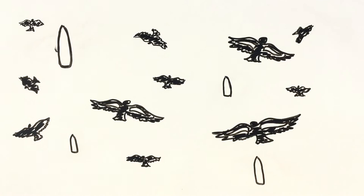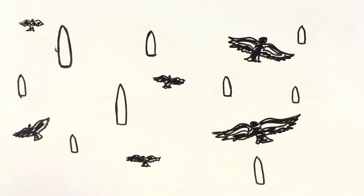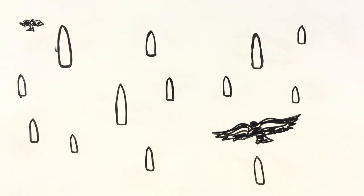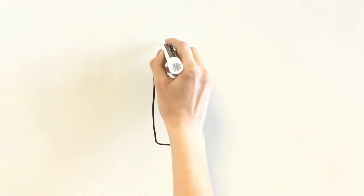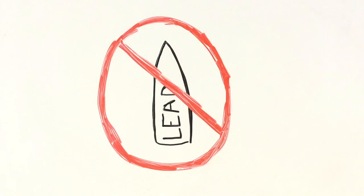Condors won't be able to survive without human help if lead continues to be a problem. The best way to improve the chances of these iconic birds is to stop using lead bullets to kill the animals they eat.